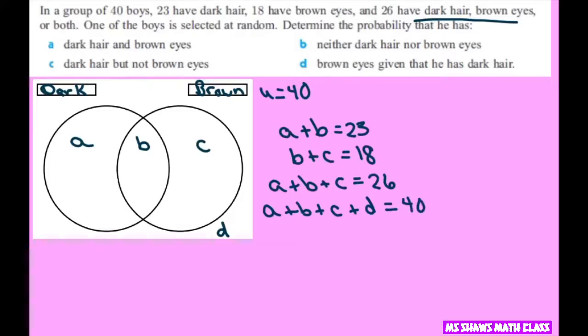So looking at this and working backwards, we know that A plus B plus C is 26. So we get 26 plus D equals 40. So if you subtract 26 from 40, you get D equals 14.